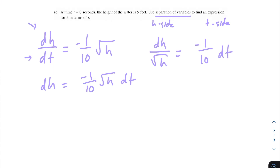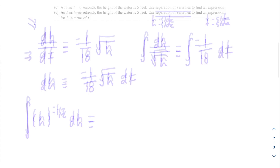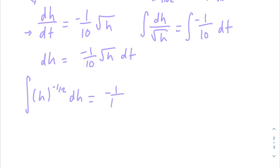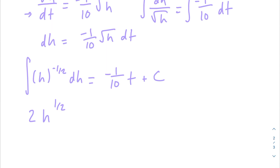We don't have a strict t term, but that's okay — integrating will give us t. We integrate both sides: the left side is the integral of h to the negative one-half dh, and the right side integrates to negative one tenth times t plus C. Applying the power rule on the left, we add one to the exponent to get h to the one-half, and place a factor of 2 out front, giving 2 times the square root of h equals negative one over ten times t plus C.